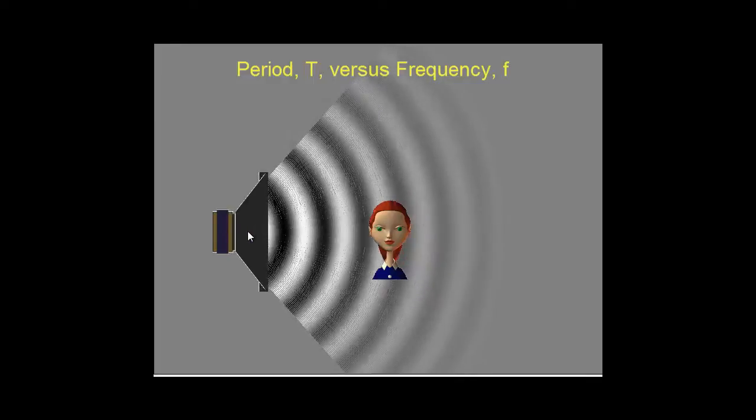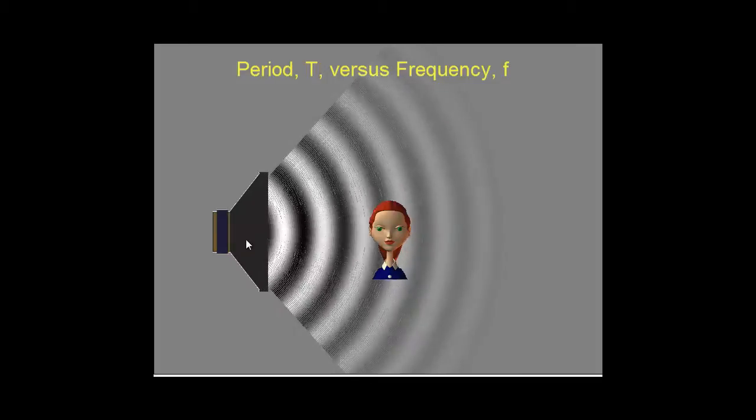As it's pushing forward it creates a compression wave indicated by the white lines on the diagram, and as it pulls back it creates a rarefacted wave indicated by the dark lines. Those differences in pressure are going to be detected by your eardrum and that's what your brain senses as various frequencies as your eardrum vibrates at the same rate that the speaker is moving in and out.